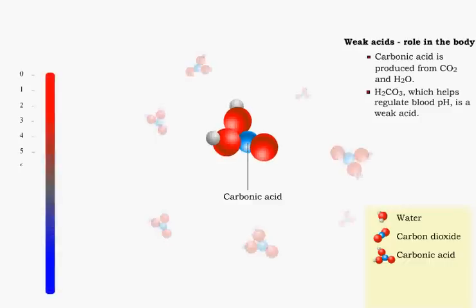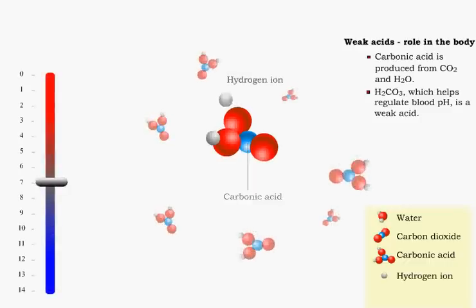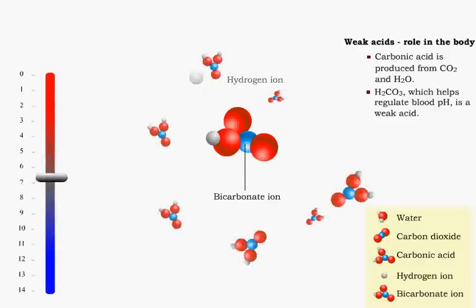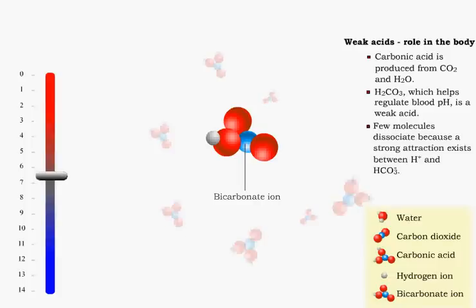A weak acid partially dissociates in water because there is a strong attraction between the hydrogen ion and the bicarbonate ion.